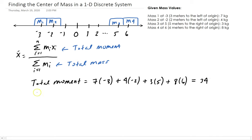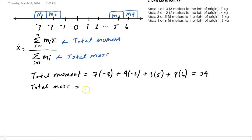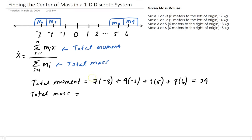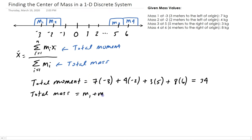Now we need the total mass, which is just taking the sum of the masses: m₁ + m₂ + m₃ + m₄. That gives us a sum of 22.